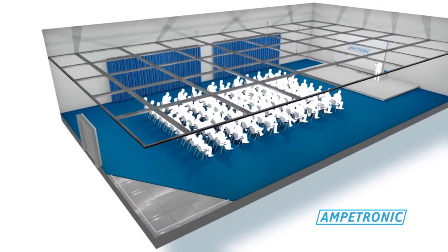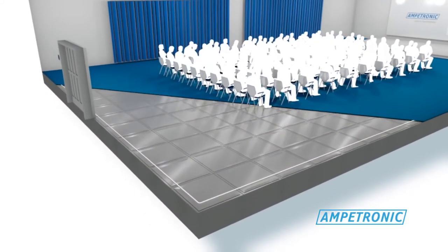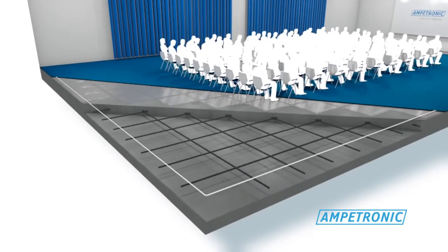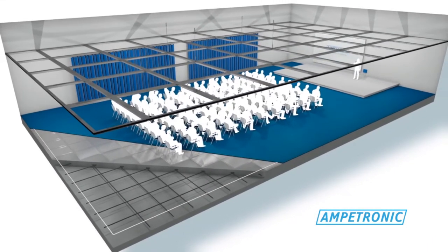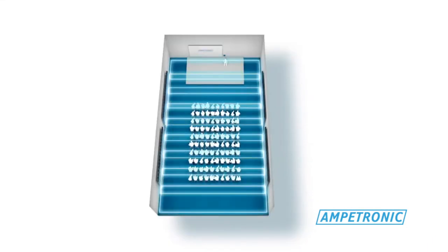You can't always use a perimeter loop around a room, as many modern buildings contain metal that absorbs the hearing loop's magnetic field.